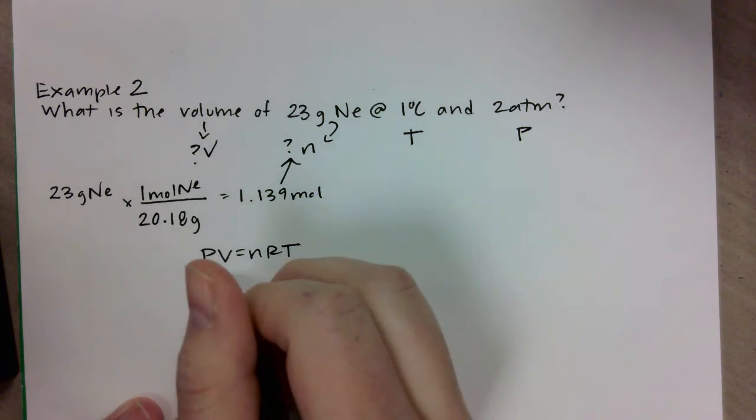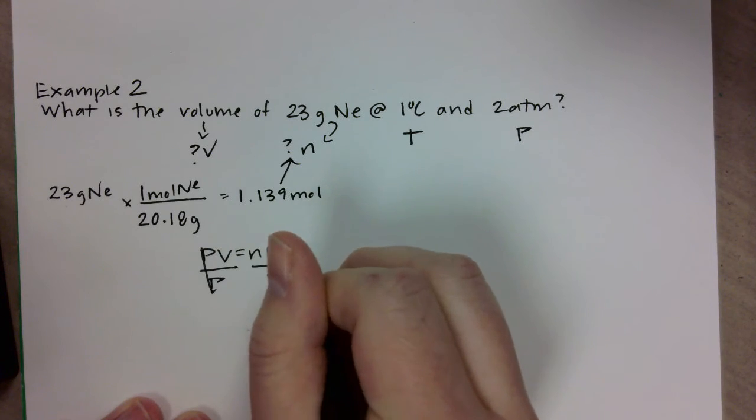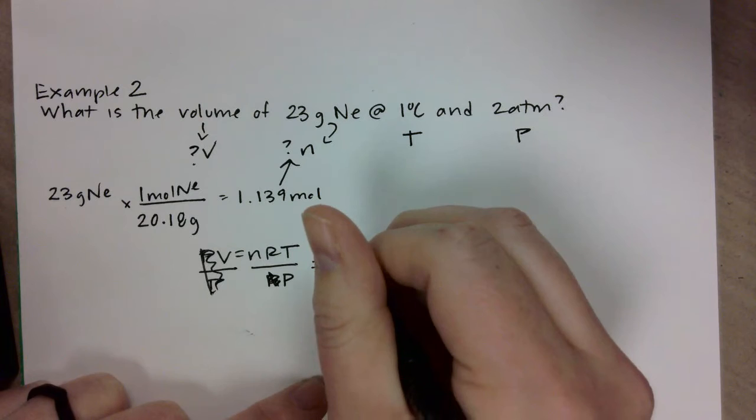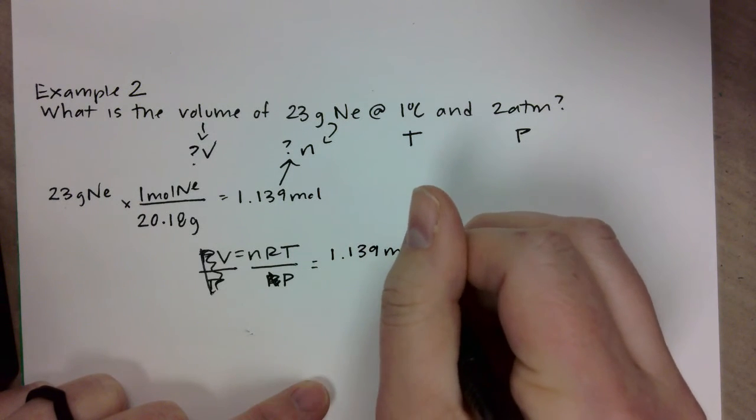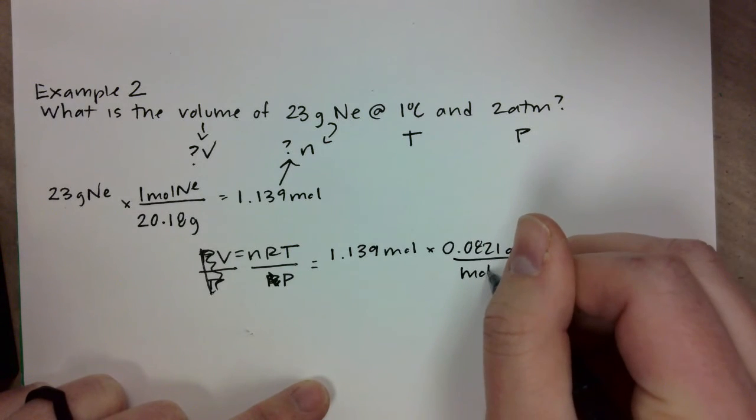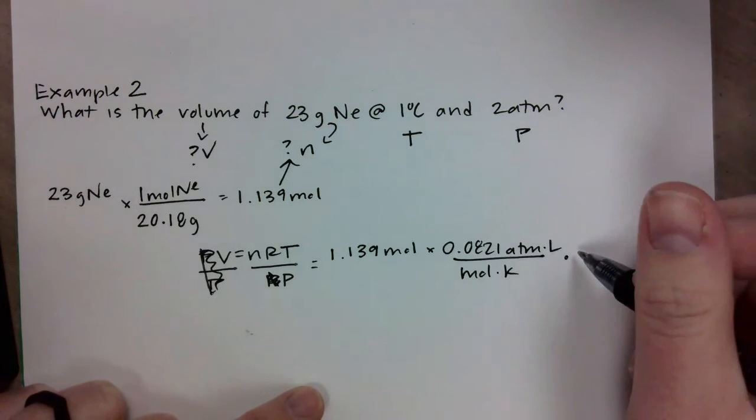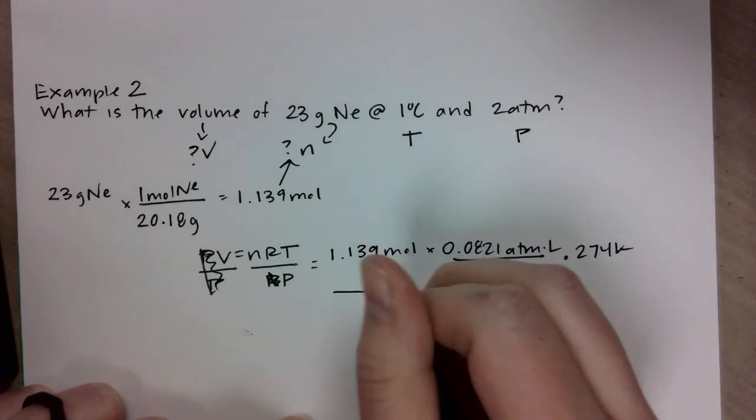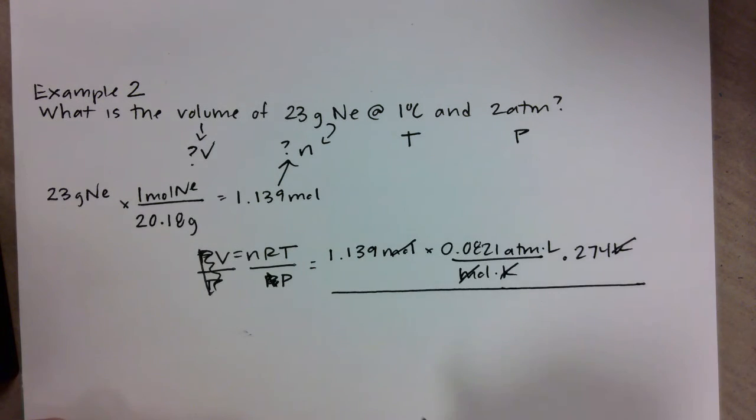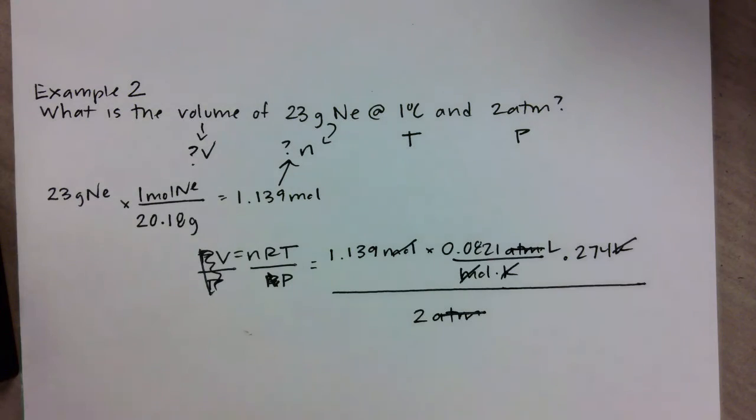If we think about our law as PV equals nRT, I am looking for my volume in this case, so I'm gonna get V all alone. Divide by P on both sides - P goes away on the left hand side - and now I'm gonna plug in my numbers. 1.139 moles times my r of 0.0821 atmosphere liter per mole Kelvin times my temperature. My temperature is 1 degree Celsius, we gotta do that conversion, so that is 274 Kelvin. Notice already with our gas constant the moles are gone and the Kelvin are gone, so all we've got are atmospheres and liters left over. I'm going to divide by my pressure which is 2 atm.